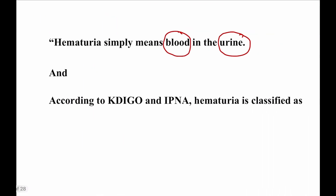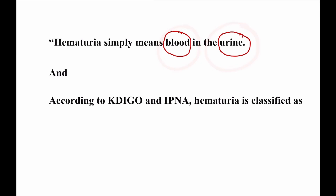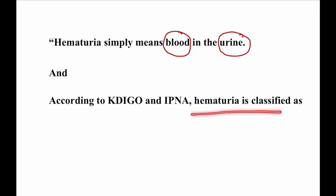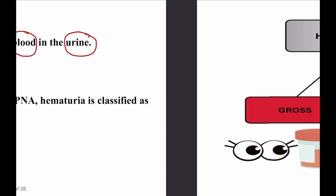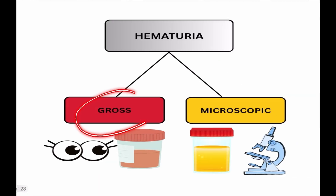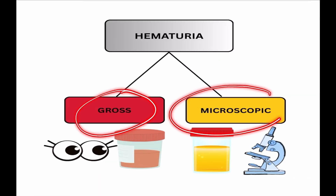So what does hematuria mean? Hematuria simply means blood in the urine, and it's a very scary thing for a parent and also a very confusing thing for a doctor. According to KDIGO and IPNA — the prominent bodies in pediatric nephrology and nephrology all over the world — hematuria is classified as gross hematuria and microscopic hematuria.